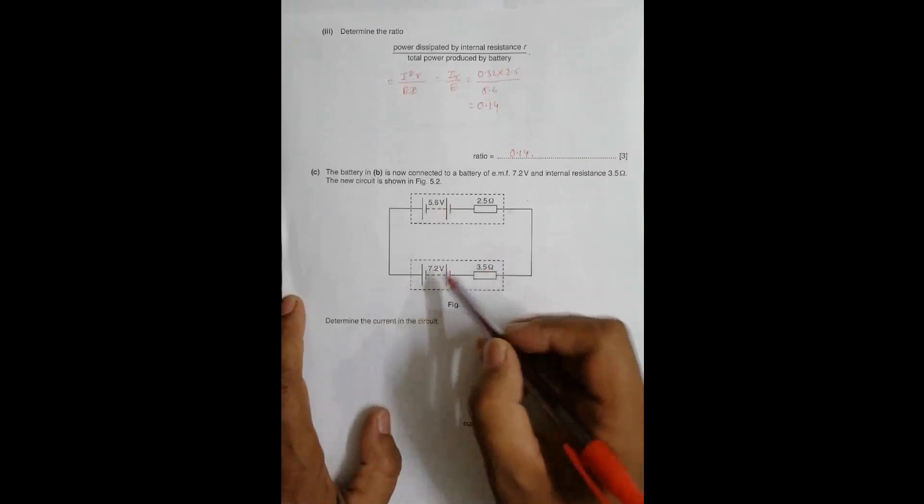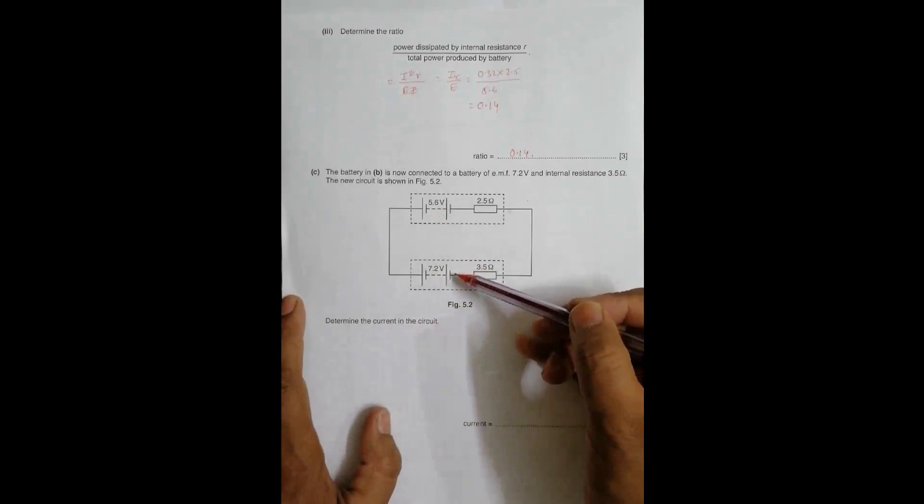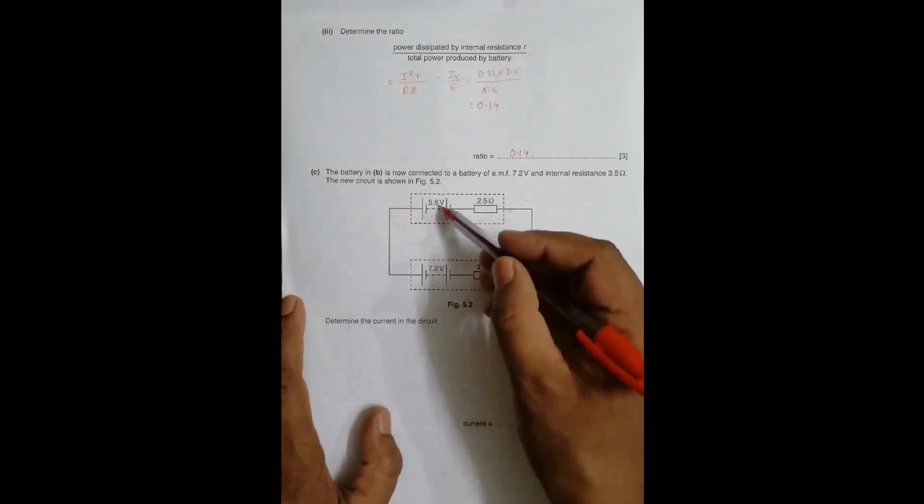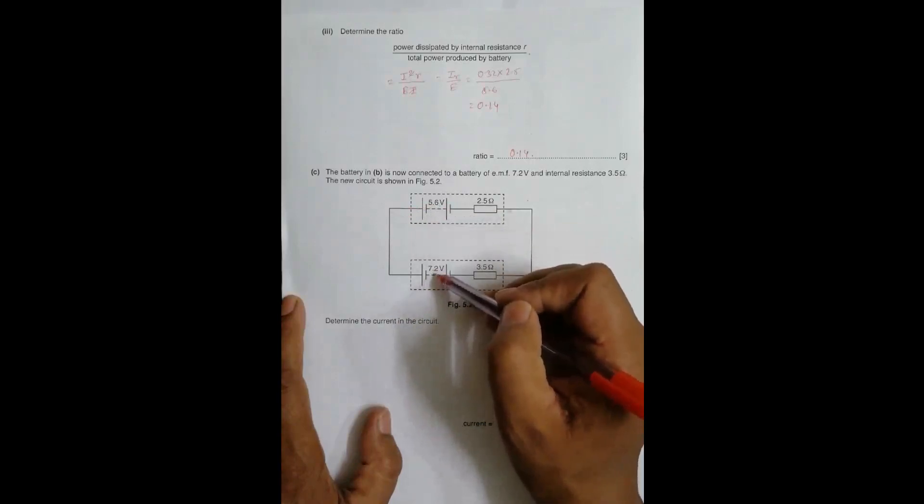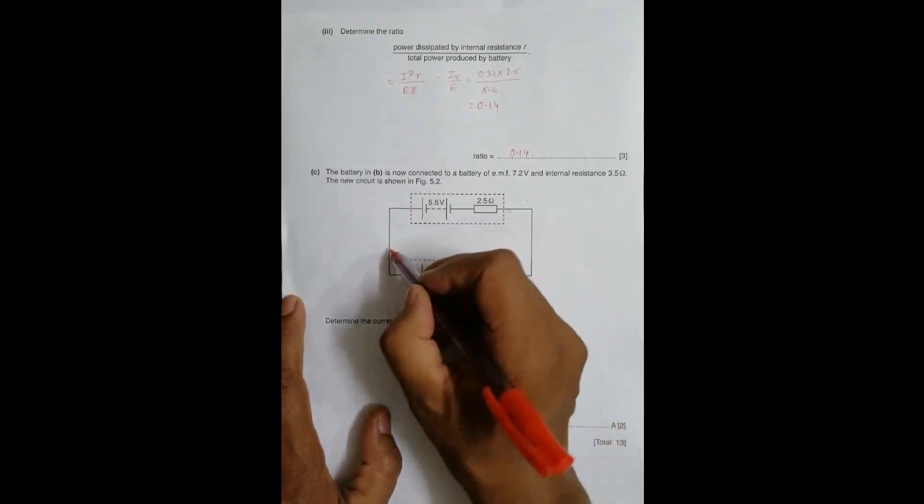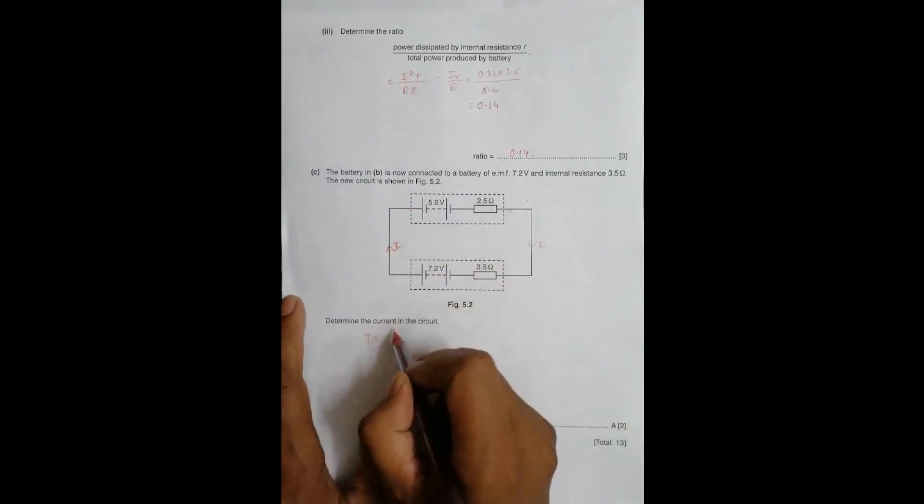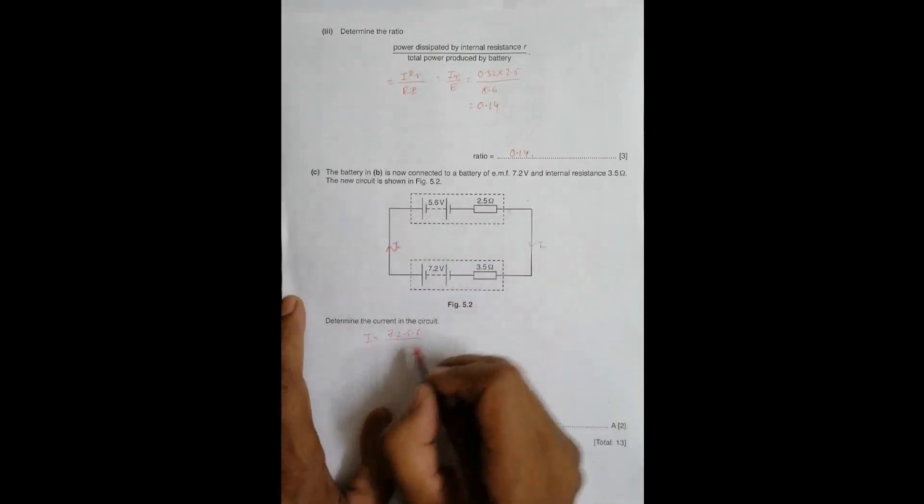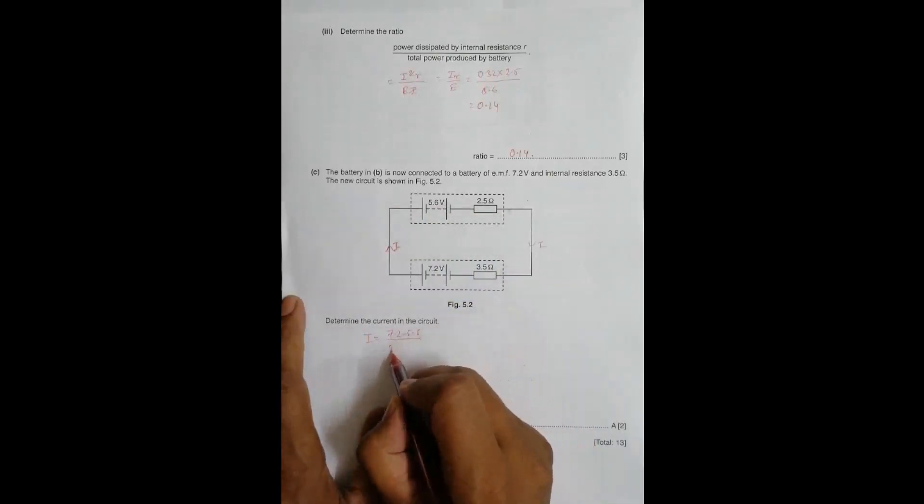Among these two batteries, this battery will try to push charge this way and this battery will push charge that way. Since the EMF is higher for this one, it will win, so the current will flow in this direction. The current equals 7.2 minus 5.6 divided by the total resistance. Since current flows through all resistors in series, it equals 3.5 plus 2.5.